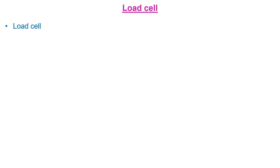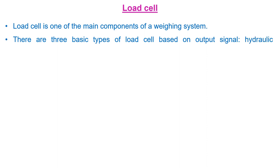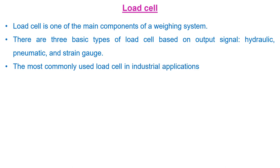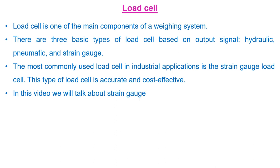Load cell is one of the main components of a weighing system. There are three basic types of load cell based on output signal: first is hydraulic, second is pneumatic, and third is strain gauge based. The most commonly used cell in industrial applications is the strain gauge load cell. This type of load cell is accurate and cost effective. In this video we will talk about strain gauge load cell only.